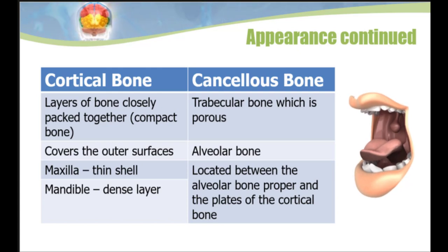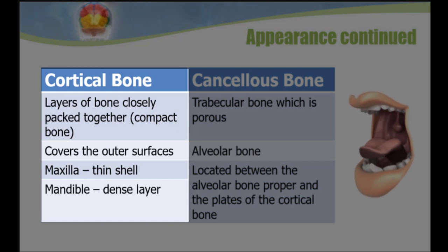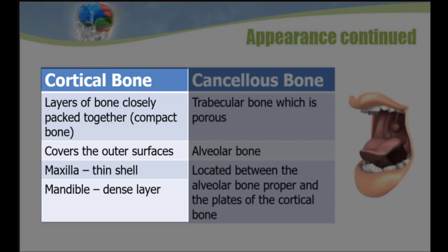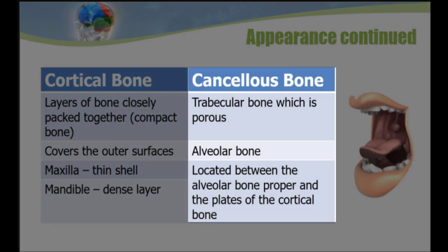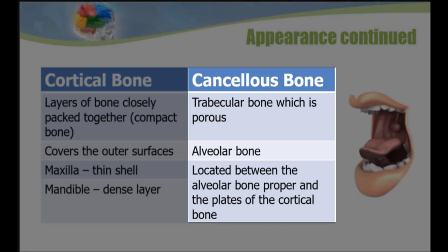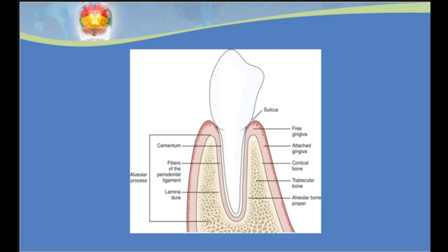Cortical bone is also called compact bone and consists of layers of bone that are closely packed together. Cortical bone covers the outer surfaces of each arch. In the maxilla, the cortical bone is a thin shell, but in the mandible it is much more dense. Cancellous bone is a trabecular, spongy bone, which is the type of bone that makes up the alveolar bone. The alveolar bone is located between the alveolar bone proper and the plates of cortical bone.